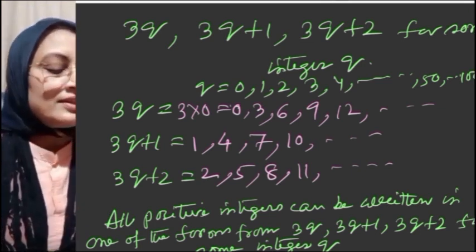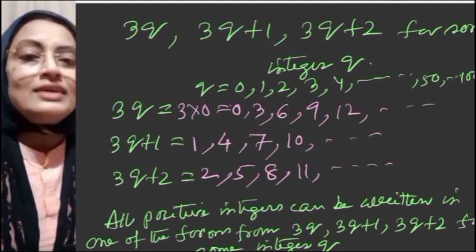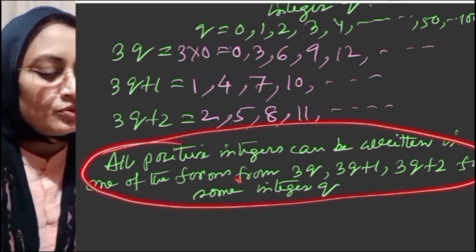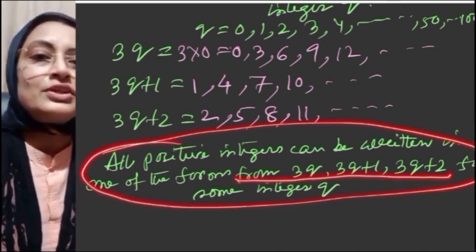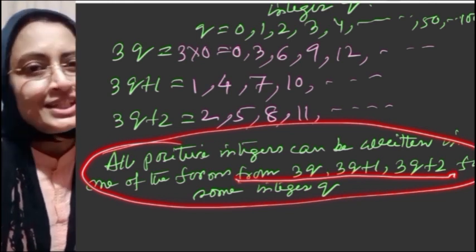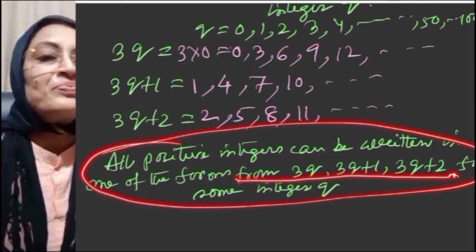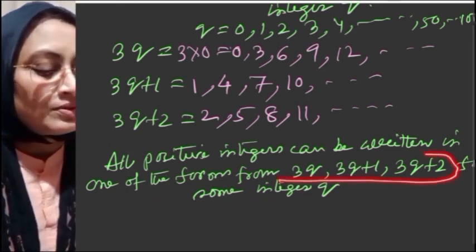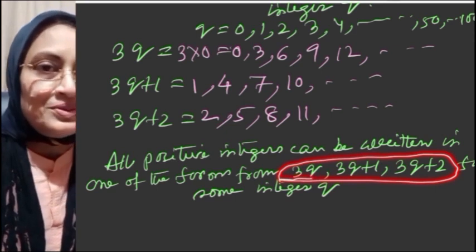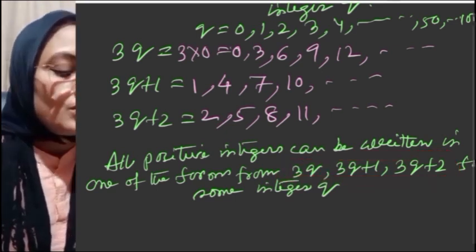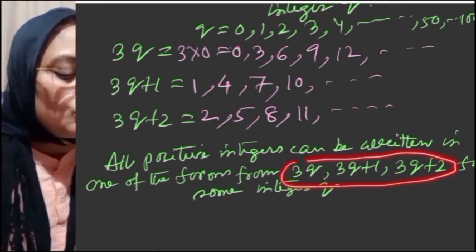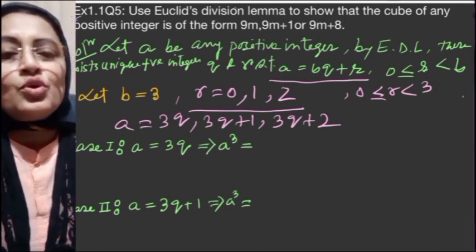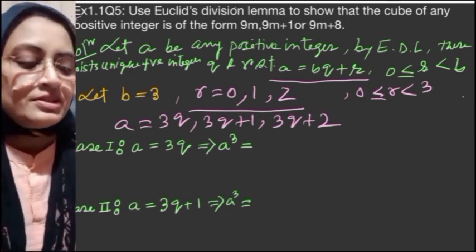All positive integers can be written in any one of the forms 3q, 3q+1, or 3q+2. In other words, every positive integer must be in one of these three forms. Now I will show you the proof for each case.